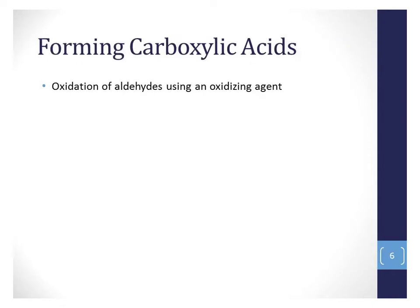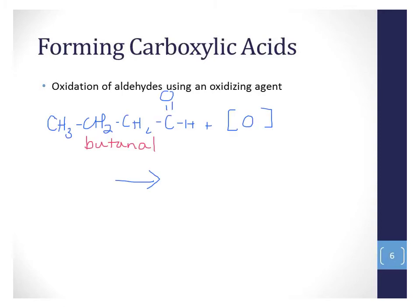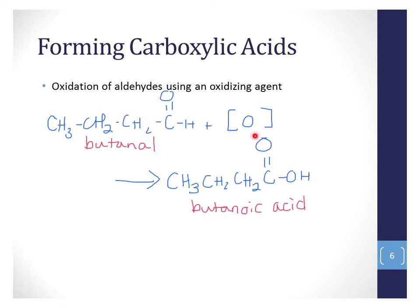In the last video, we saw the controlled oxidation of a primary alcohol to an aldehyde. If we continue to oxidize that aldehyde, we can go all the way to a carboxylic acid. This reaction is very hard to control, and only certain oxidizing agents are able to stop at the aldehyde stage. This 4-carbon aldehyde is butanal, and if we oxidize it, we end up with a carboxylic acid — a 4-carbon chain with a carboxyl group is butanoic acid.